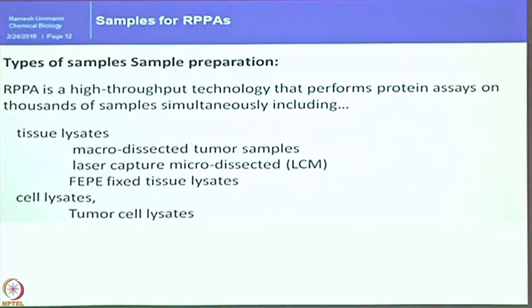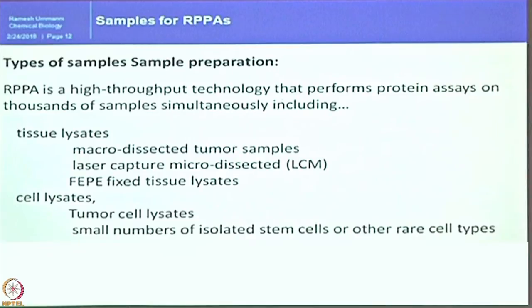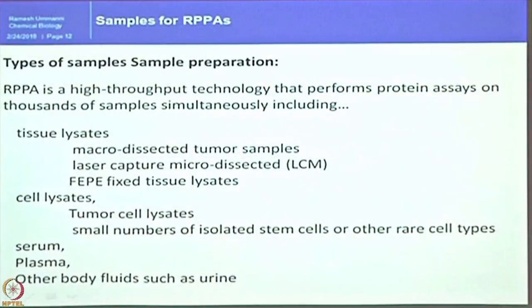Cell lysates, particularly tumor cell lysates, can be prepared from cell lines in the lab. Small numbers of isolated stem cells are another real cell type — stem cell biology often deals with thousands of cells, not millions as in cancer research. Serum, plasma, or any body fluid such as cerebrospinal fluid or urine can also be directly printed on the array following specific methods.